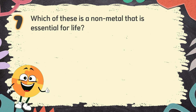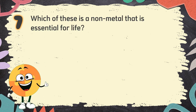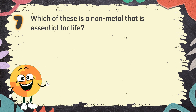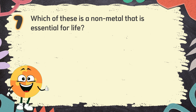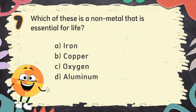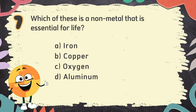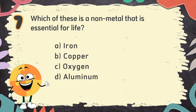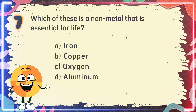Number 7. Which of these is a non-metal that is essential for life? The choices are: A. Iron, B. Copper, C. Oxygen, D. Aluminum.